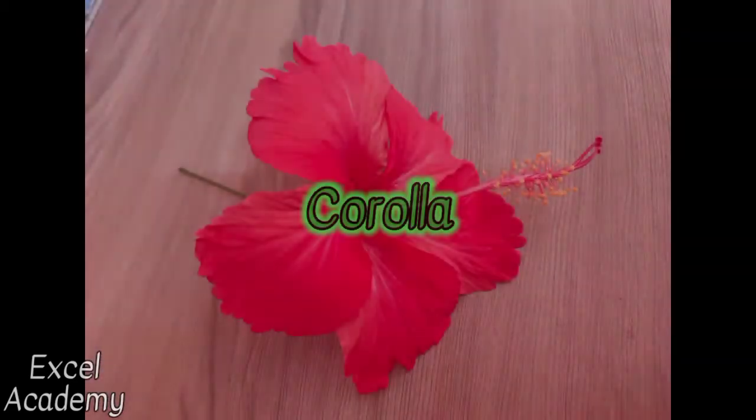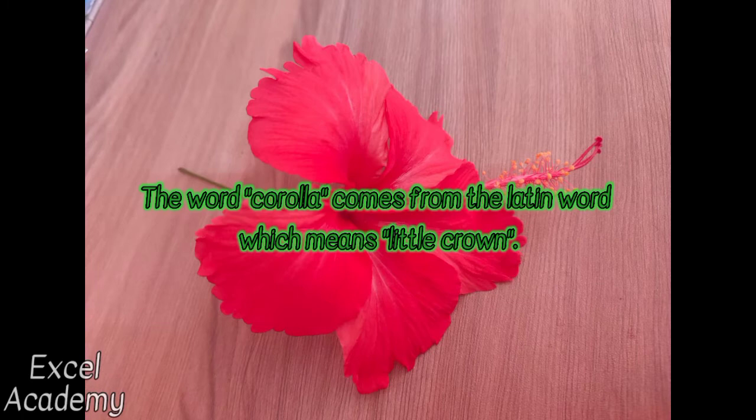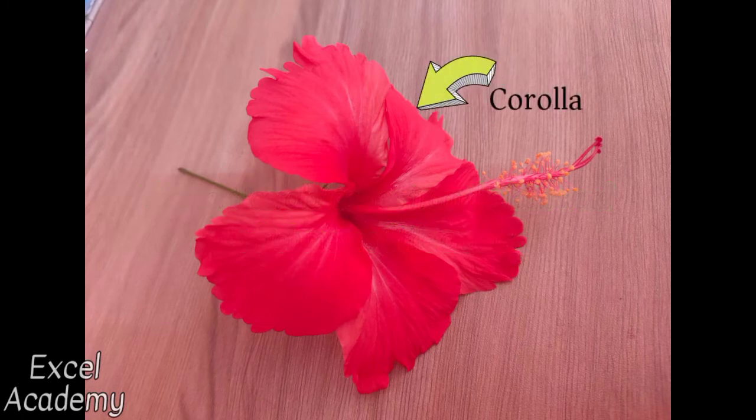Corolla. The word corolla comes from the Latin word which means little crown. It is the whorl that surrounds the reproductive part of the flower. It is also known as petals. Mostly, petals are brightly colored and have a sweet fragrance.